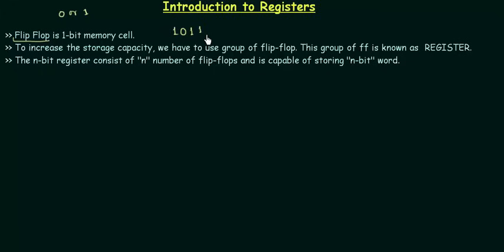Our prime aim in registers is to design something that will store more than one bit. To increase storage capacity — that is, to increase the number of bits — we have to use a group of flip-flops. This group of flip-flops is known as a register. An n-bit register consists of n flip-flops and is capable of storing an n-bit word. One flip-flop stores one bit; n flip-flops store n bits. For a four-bit register, we need four flip-flops.